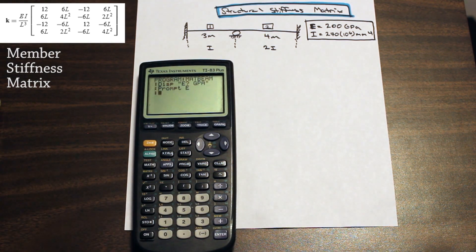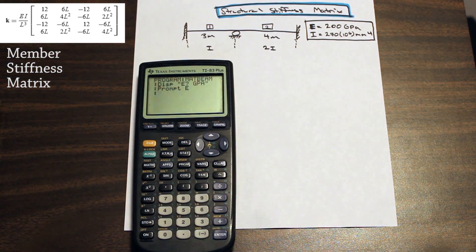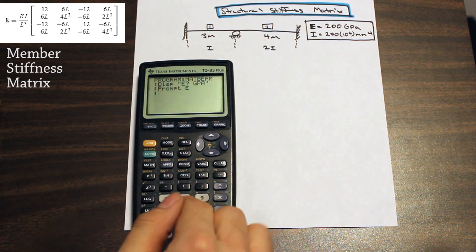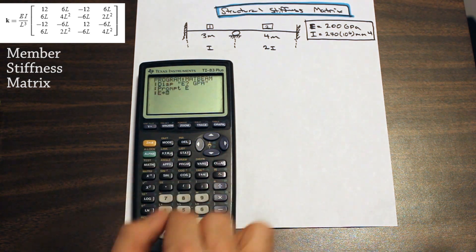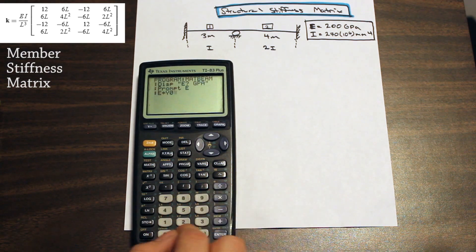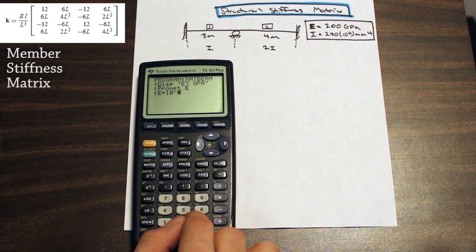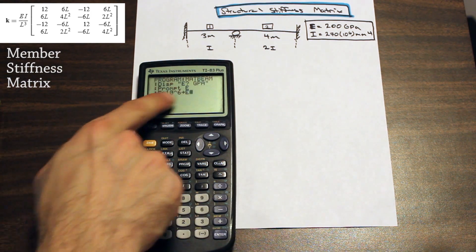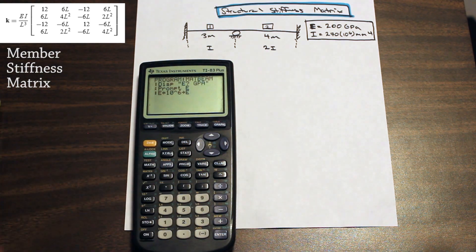E is now stored in GPa. We want to work in kilonewtons and meters, so to convert from GPa to kilonewton per meter squared, we multiply by 10 to the 6. So we take E, multiply it by 10 to the power of 6, and store it back in E. We've converted E to kilonewton and meter units, and the calculator does it for us.